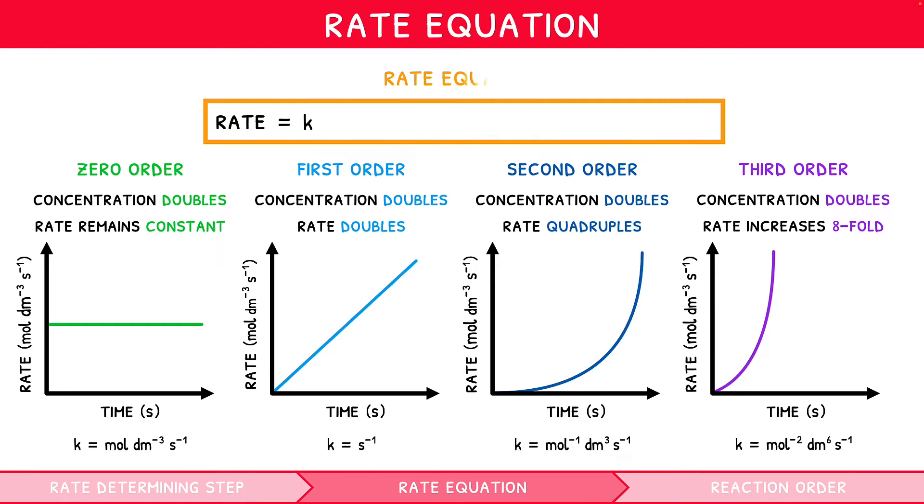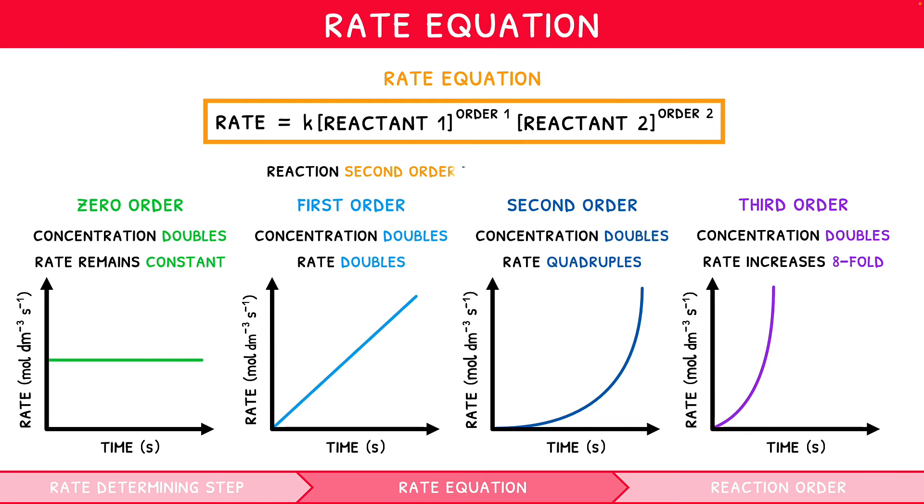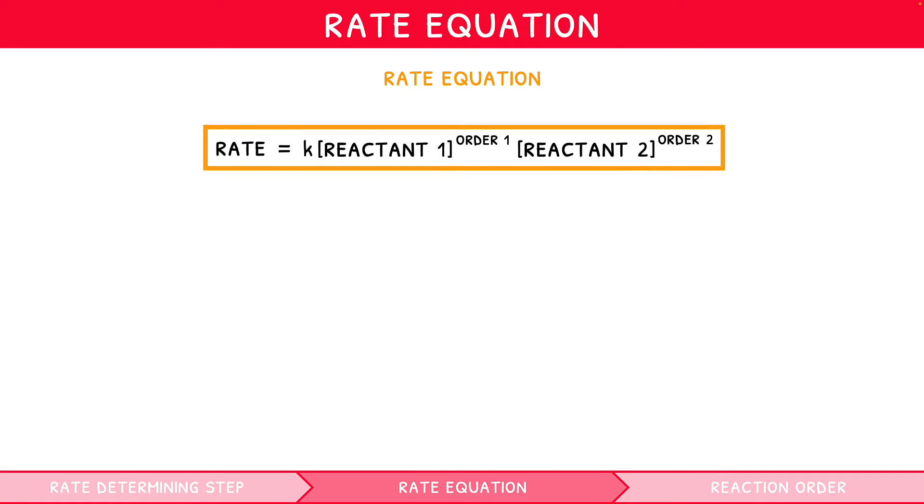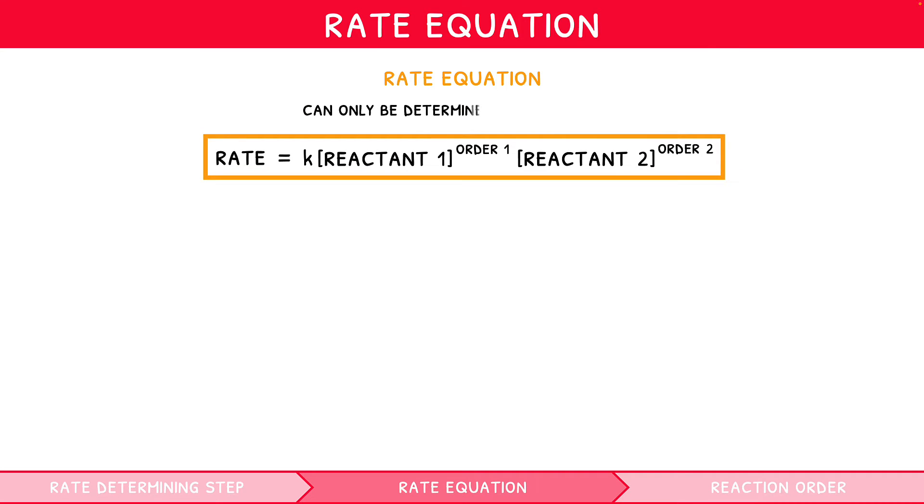So how do we write a rate equation? As introduced earlier, rate equals k times reactant one times reactant two. When writing the reactants, you write them within square brackets to the power of their order, i.e. a second order reaction with respect to HCl would be written as HCl squared. However, a rate equation cannot just be created, it must be determined experimentally, i.e. using data. This is because a stoichiometric equation alone does not show the reaction mechanism, a concept explored later in this video.